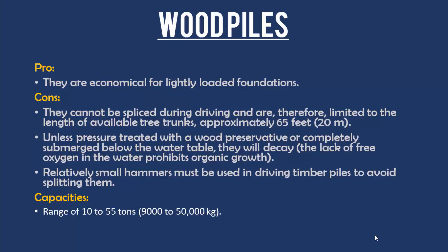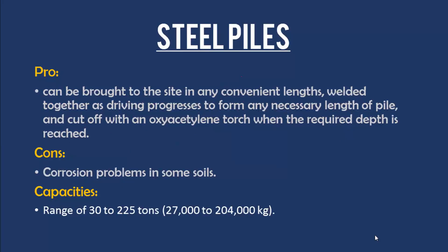Wood piles: the pros are that they are economical for lightly loaded foundations. The cons are that they cannot be spliced during driving and are therefore limited to the length of available tree trunks, approximately 65 feet (20 meters). Unless pressure treated with wood preservative or completely submerged below the water table, they will decay because the lack of free oxygen in the water prohibits organic growth. Relatively small hammers must be used in driving timber piles to avoid splitting. Their capacity ranges from 10 to 55 tons (9,000 to 50,000 kg).